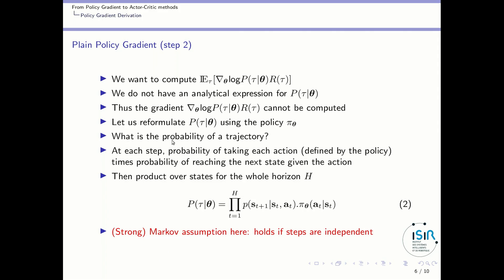What is the probability of a trajectory? At each step, you have the probability of taking a particular action — defined by the policy — times the probability of reaching the next state given the current state and action. You get the complete trajectory by multiplying these probabilities over all states for the whole horizon. To write this expression, you have to make a strong assumption known as the Markov assumption: that the different states are independent. Let's use this expression and consider that the Markov assumption holds.